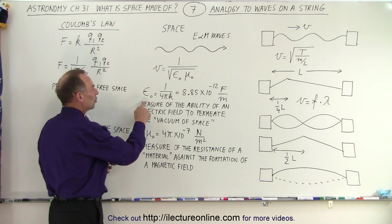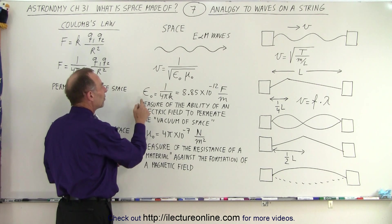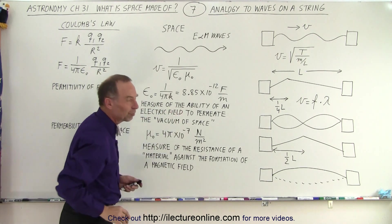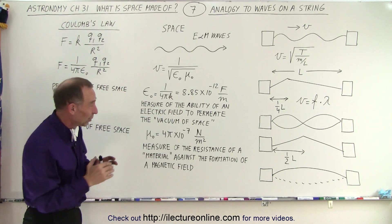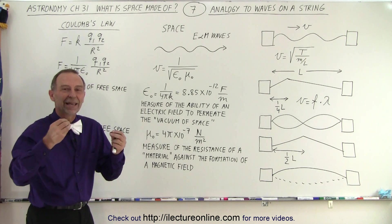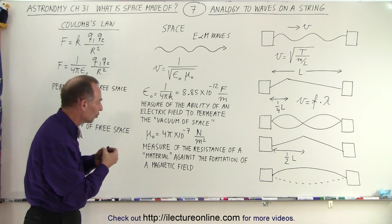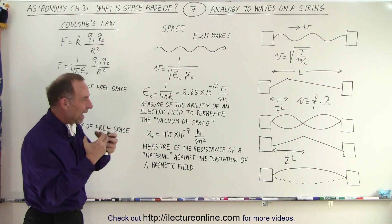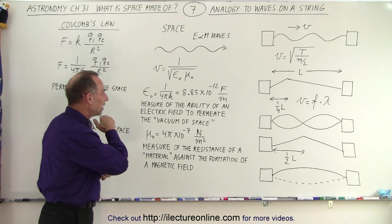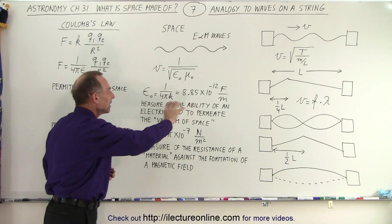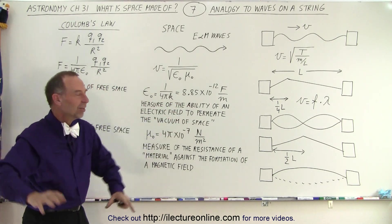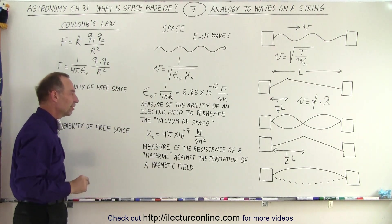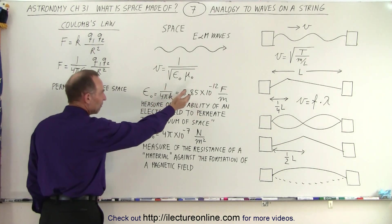We can define the permittivity of free space by a measure of the ability of an electric field to permeate the vacuum of space. Now of course, the vacuum of space we call vacuum because it will be devoid of elements, of molecules, of atoms, but it doesn't mean that space is nothing. Space still has properties, and so the ability of the electric field to permeate that space, whatever that space is, is controlled by this property which we call permittivity of free space.